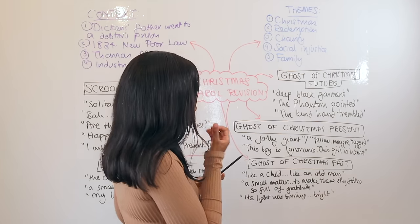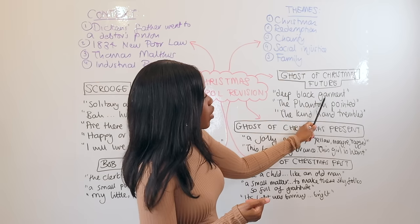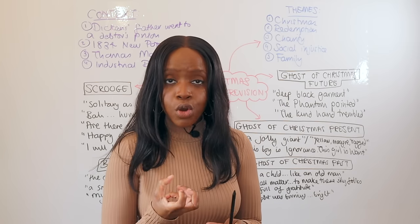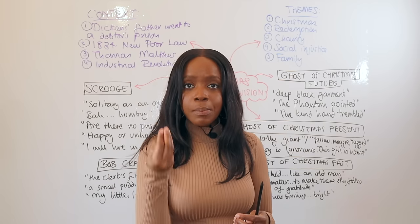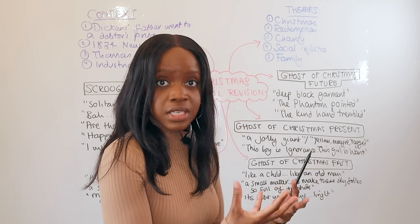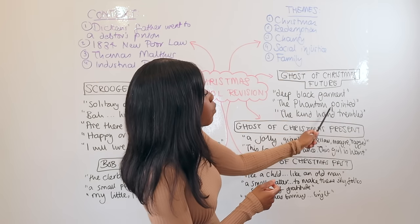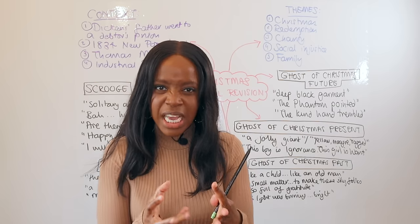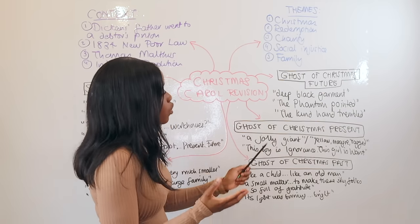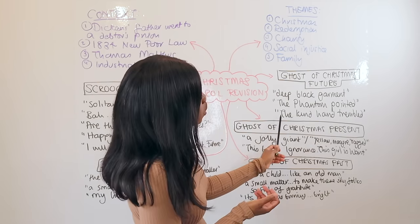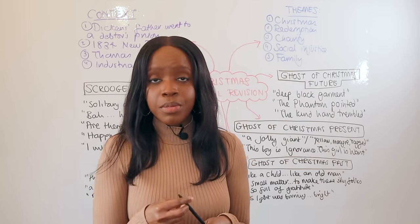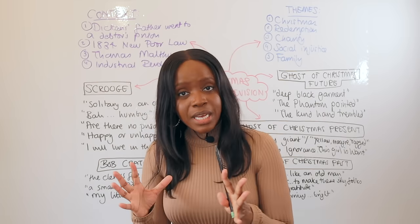The Ghost of Christmas Future is the most sinister ghost. The first quotation describes him as dressed in a 'deep black garment' — the adjective 'black' emphasizes his sinister appearance and foreshadows Scrooge's death, as black is associated with coffins. The second quotation is how 'the phantom pointed' — alliteration of the plosive P — illustrating that the ghost is unyielding, showing Scrooge his fate is set. However, the final quotation — 'the kind hand trembled' — with the adjective 'kind' illustrates that the ghost believes Scrooge can be redeemed and forgiven, giving him another chance.